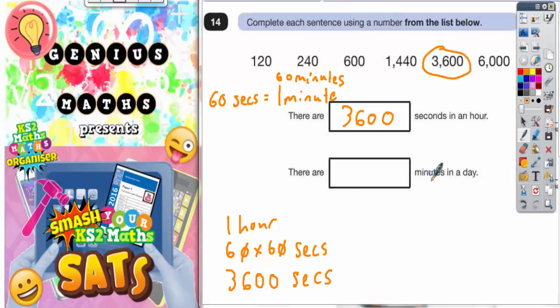Now then, there are blank minutes in a day. Well, you've got 60 minutes in one hour and then you've got 24 hours in one day. So to get how many minutes are in one day, you've got to do 60 minutes for one hour but multiply that by 24 because there are 24 hours.